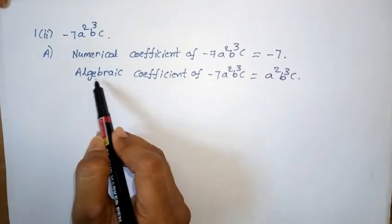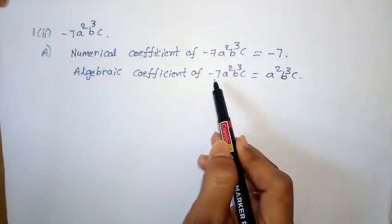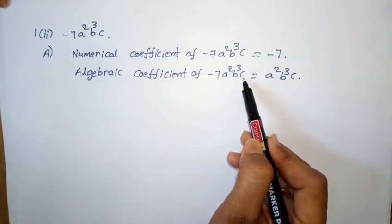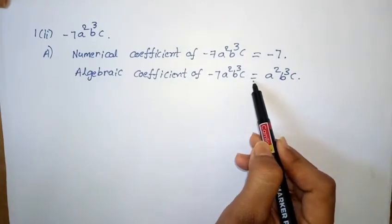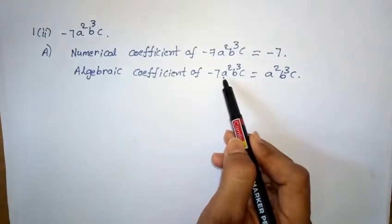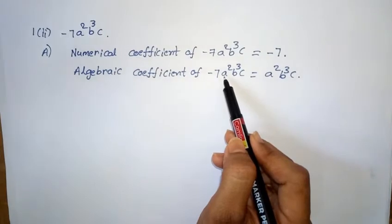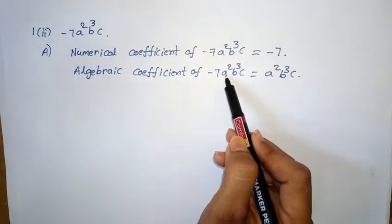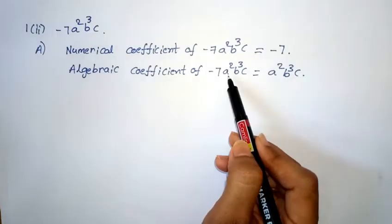Next, algebraic coefficient of minus 7a²b³c — algebraic coefficient is all symbols and letters. So a², b³, c is the algebraic coefficient.